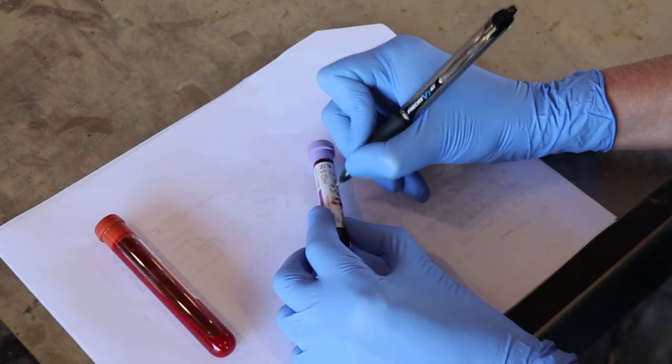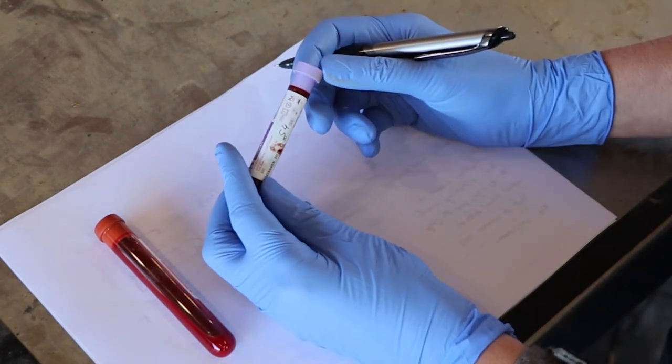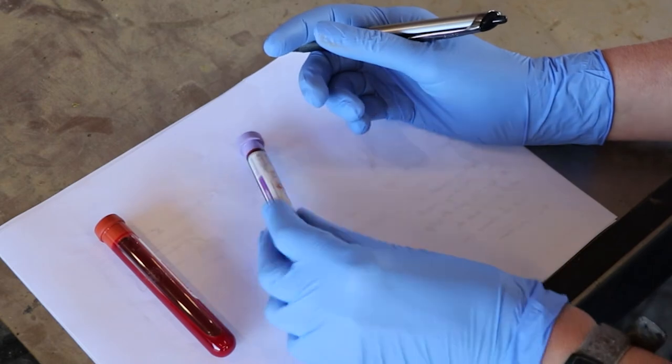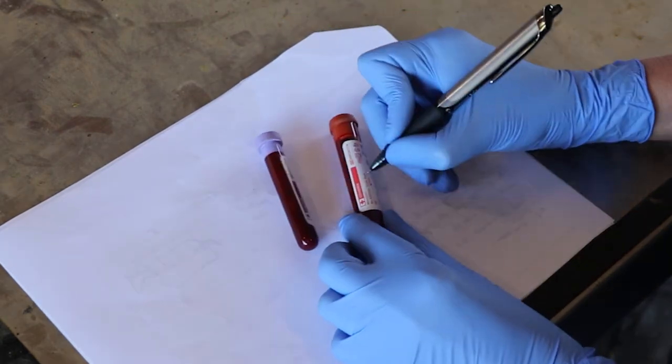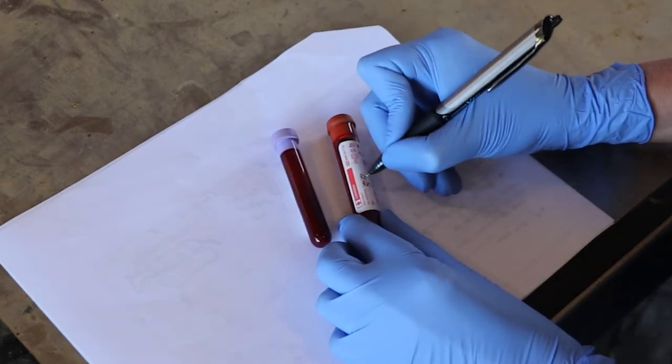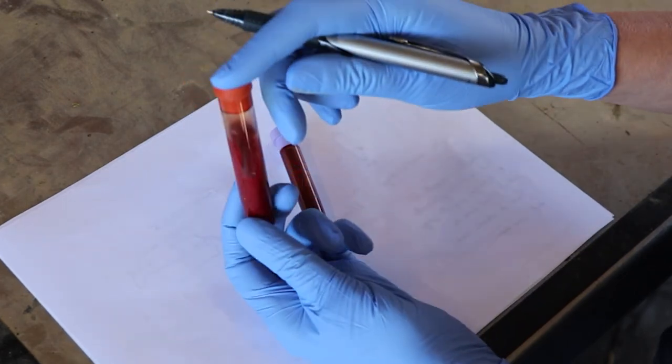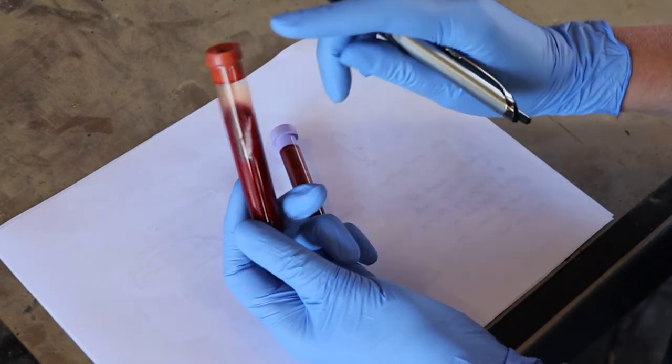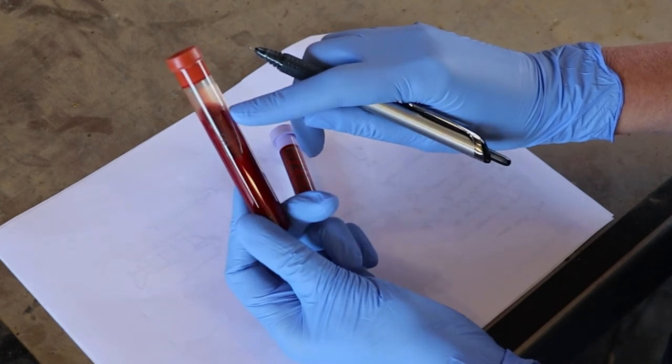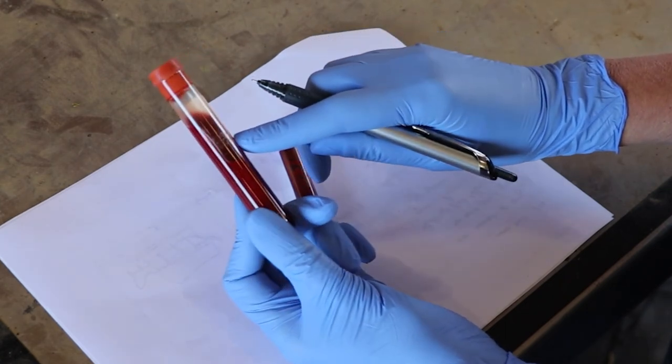Don't forget to label the tube with an ear tag number or other identification so you know which animal it is from, and then of course repeat that if you take more than one blood tube. So again, this is a red top tube so you can already see a blood clot forming as the red blood cells separate from the serum in these types of tubes.